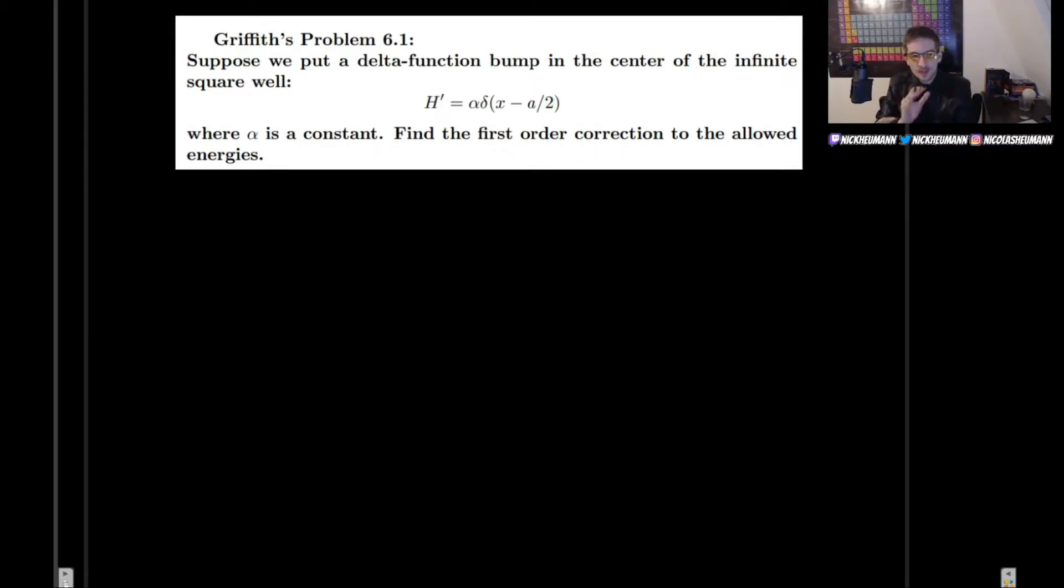Now, what this problem states is that suppose we put a delta-function bump in the center of the infinite square well, and the Hamiltonian for this situation looks like H prime, the perturbative Hamiltonian, is going to be alpha (some constant) times the delta function, which would be x minus a over 2. Of course, this is because we are in the center of the infinite square well. And what we are asked to do is to find the first order correction to the allowed energies.